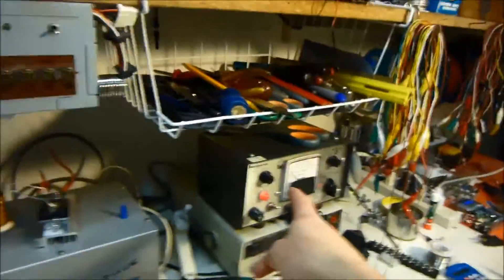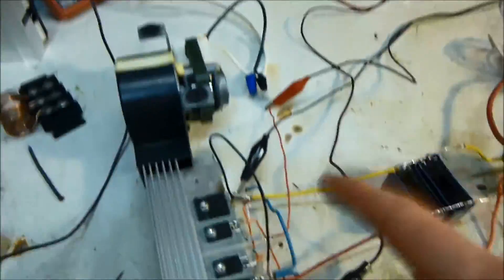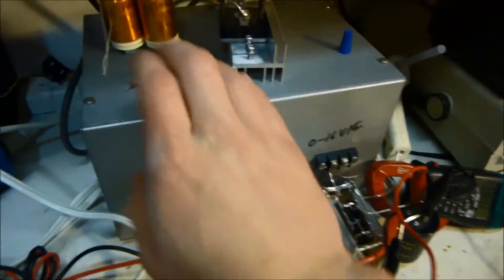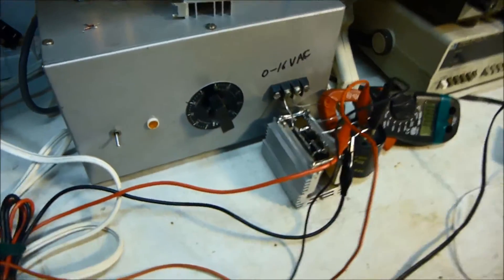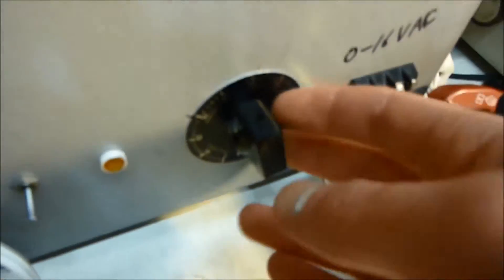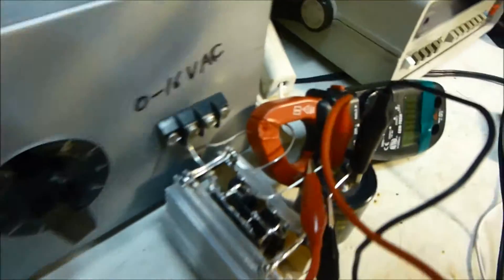So I'm using that to drive the gate, and then I'm using this power supply as the main current. So I've got a nice, this is actually a Variac in here, and we've got some transformers, I'm not going to get into that.